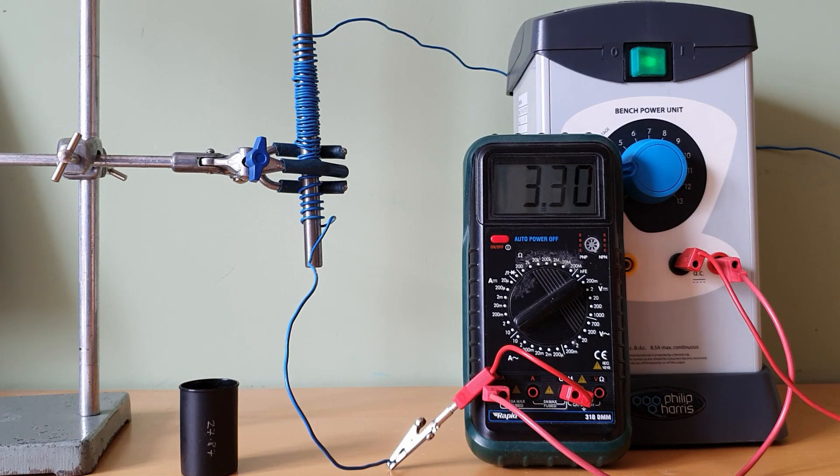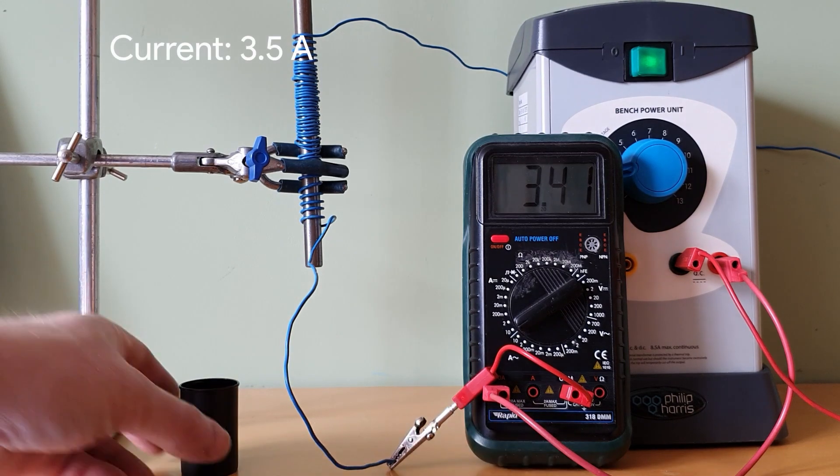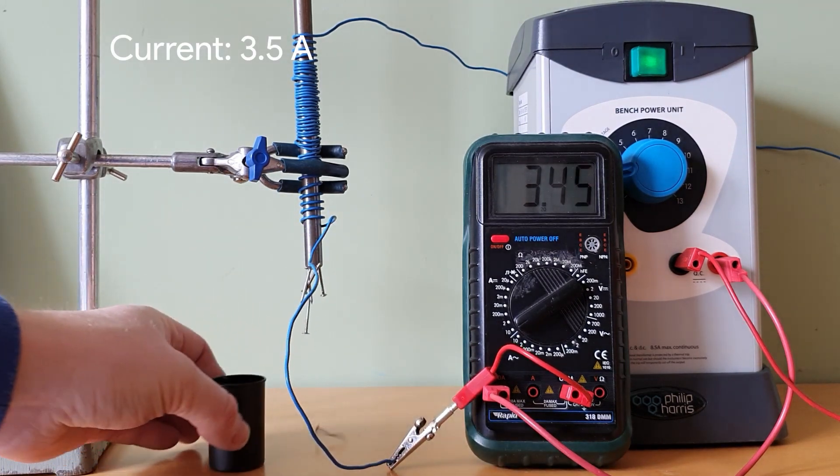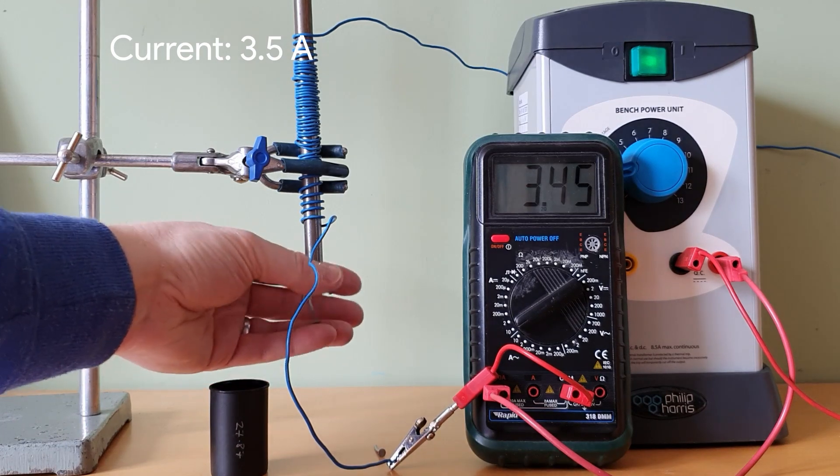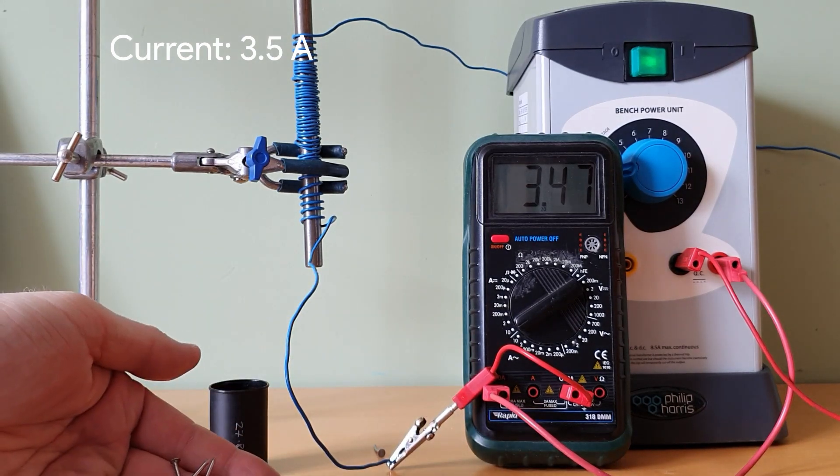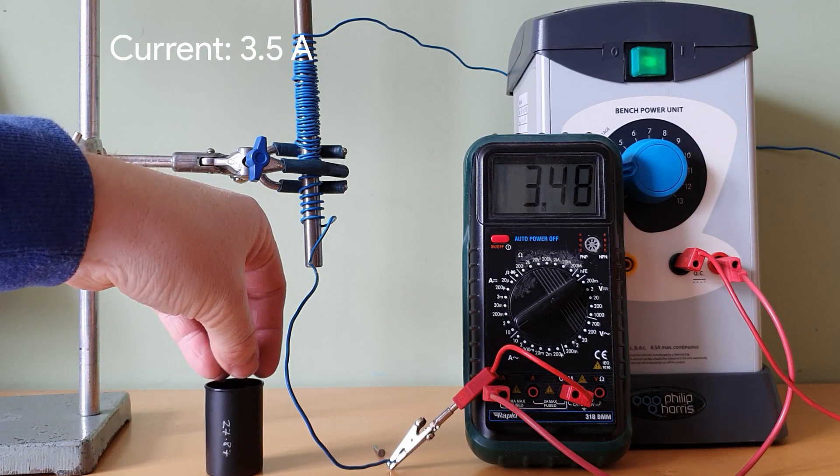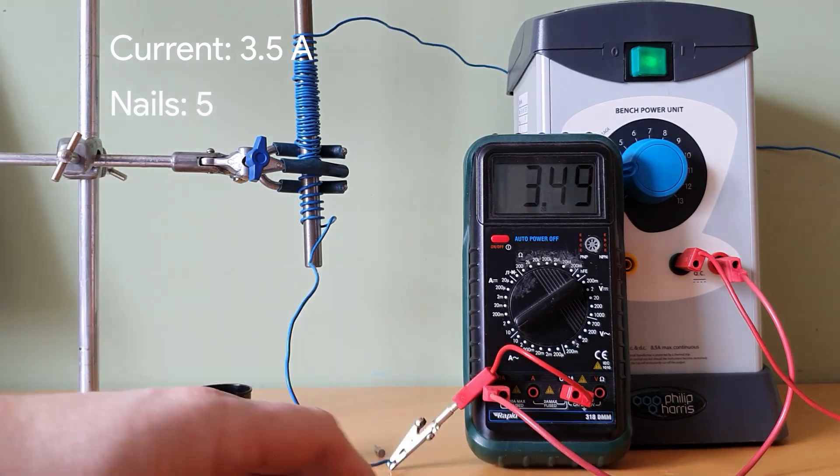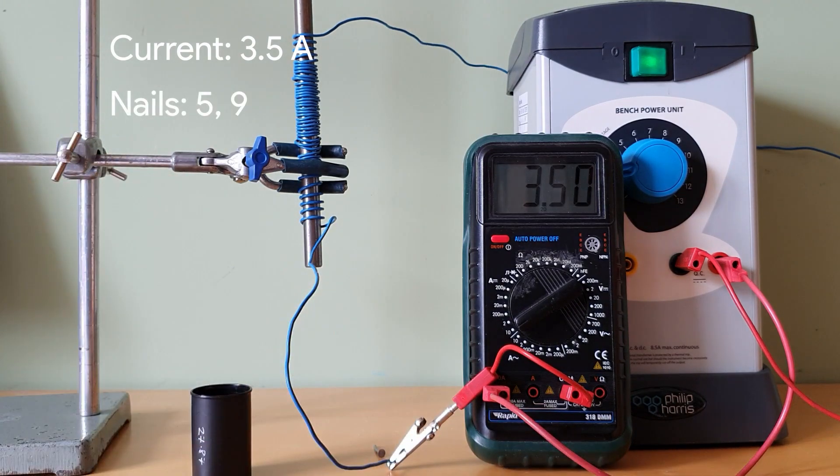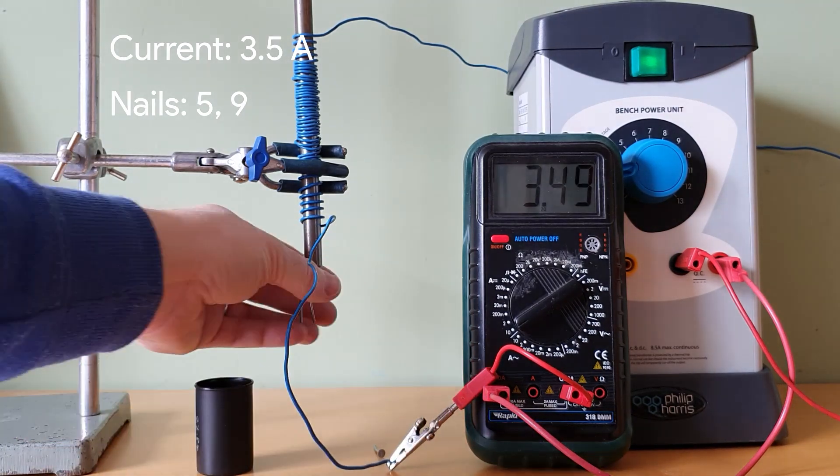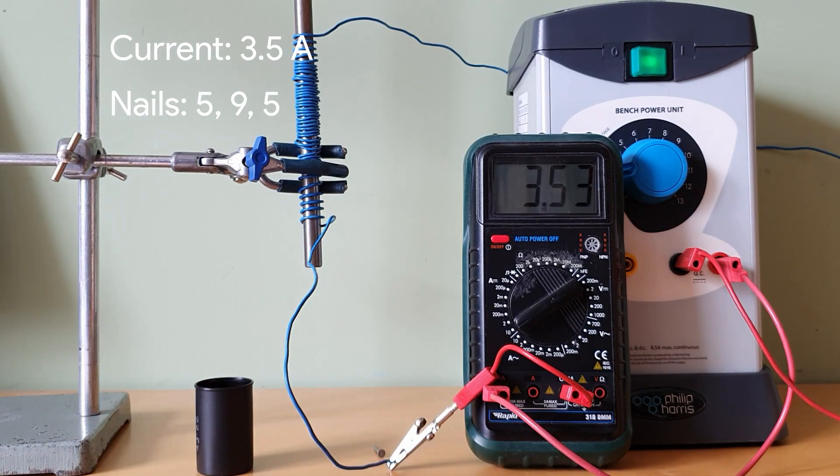Here's a current of about 3.38 amps. Going to fluctuate a little bit. One, two, three, four, five. One, two, three, four, five, six, seven, eight, nine. And five. So five, nine, and five.